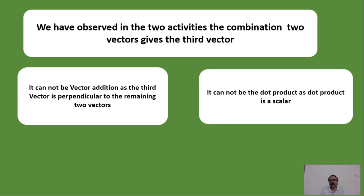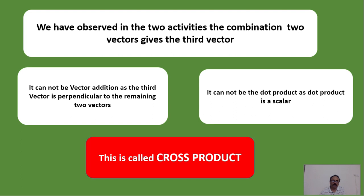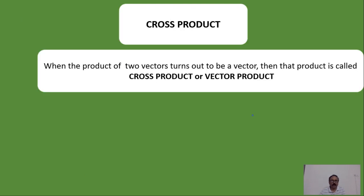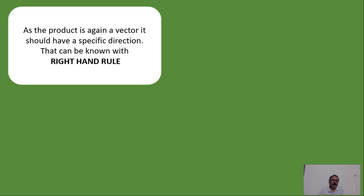Can it be considered a dot product? No, because dot product is not a vector, but in both activities we got a vector. So this must be a different operation from vector addition and dot product. This is known as the cross product. Cross product is defined when the product of two vectors turns out to be a vector. If the product of two vectors is a scalar, we call it dot product; if it is again a vector, we call it cross product or vector product.